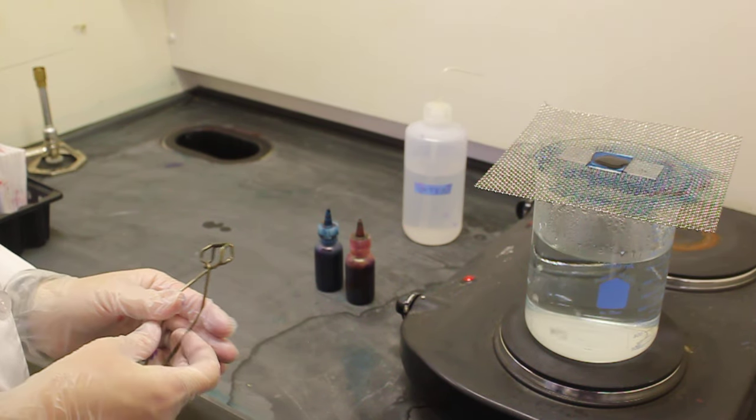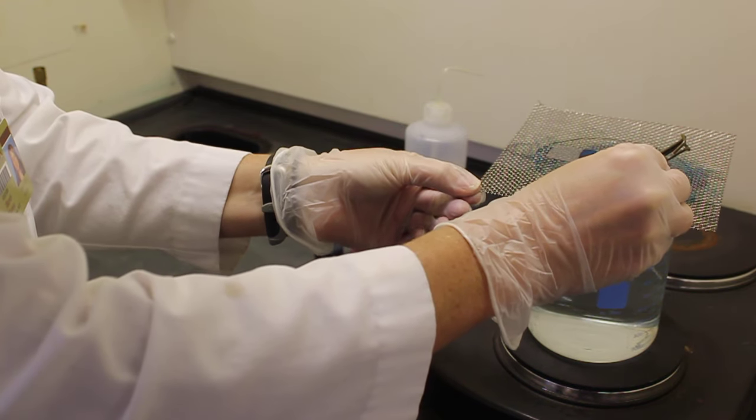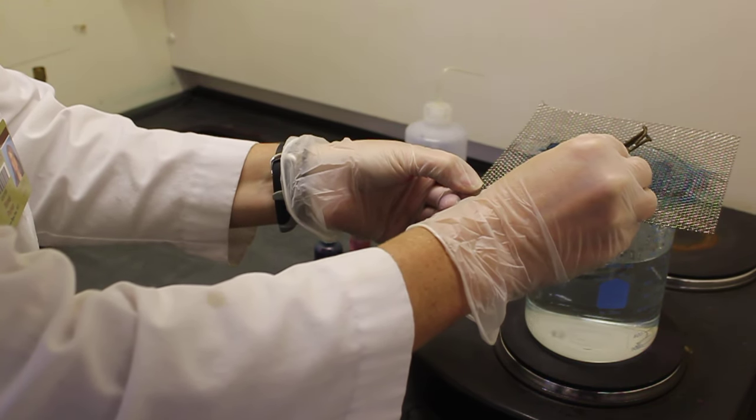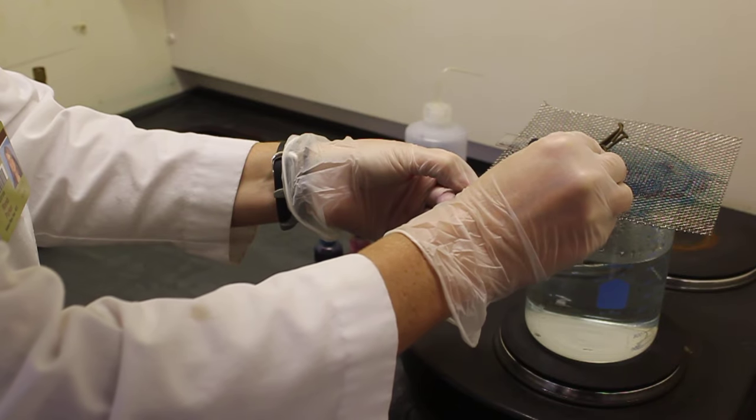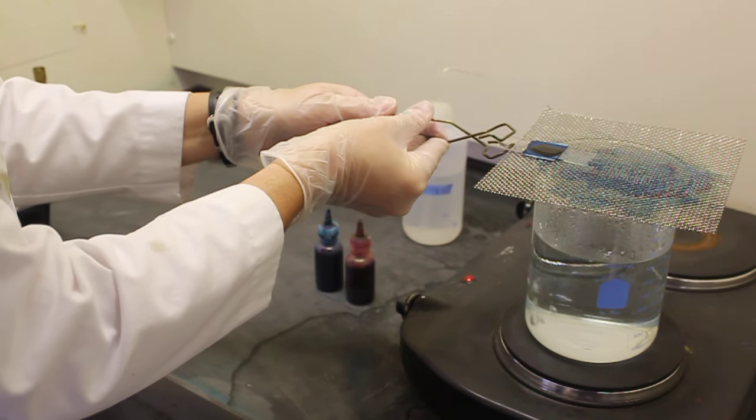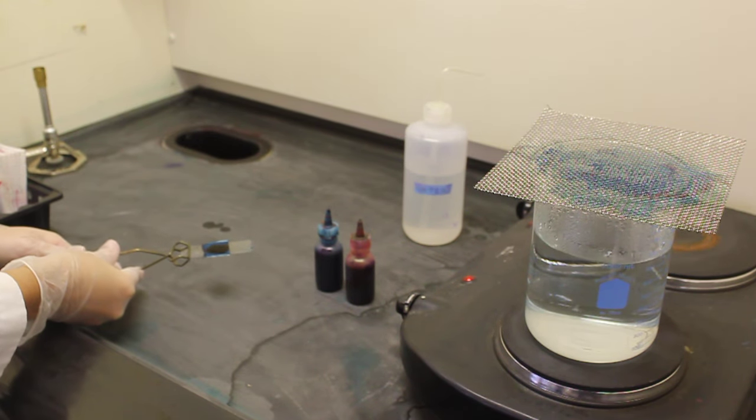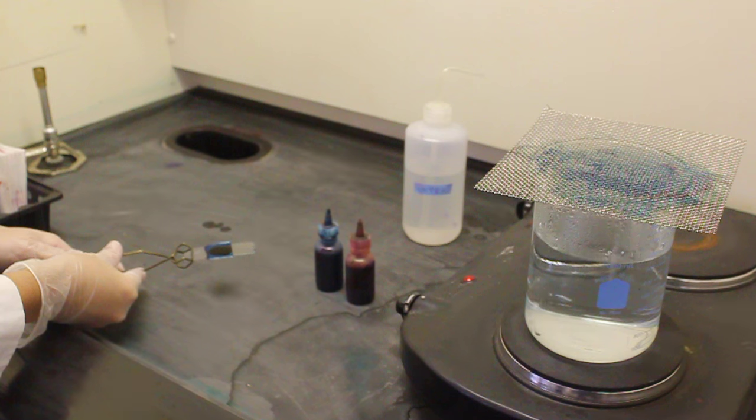Once the five minutes is up, while being very careful, you can take your slide off of the hot plate. I find the best procedure is to use the test tube tongs to slide the slide out of the steam and grab the slide. It is very important at this point to let your slide cool off before you grab the slide with your hand.